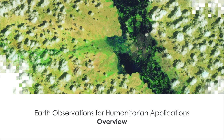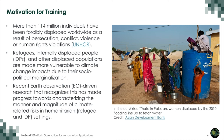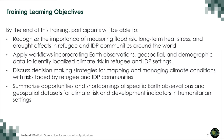The following slides provide an overview of the three-part webinar series on Earth Observations for Humanitarian Applications. More than 114 million individuals have been forcibly displaced worldwide as a result of persecution, conflict, violence, or human rights violations. Refugees, internally displaced people, and other displaced populations are made more vulnerable to climate change impacts due to their socio-political marginalization. Recent Earth observation-driven research has made progress toward characterizing the manner and magnitude of climate-related risks in humanitarian settings. By the end of this training, participants will be able to recognize the importance of measuring flood risk, long-term heat stress, and drought effects in refugee and IDP communities around the world.